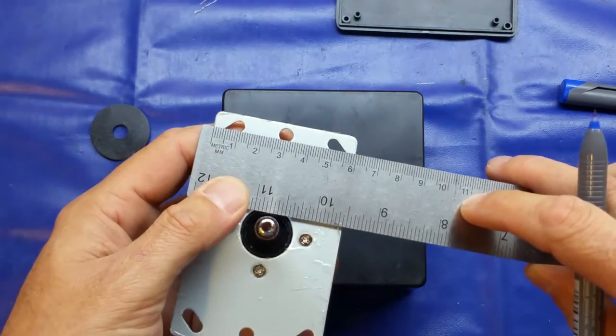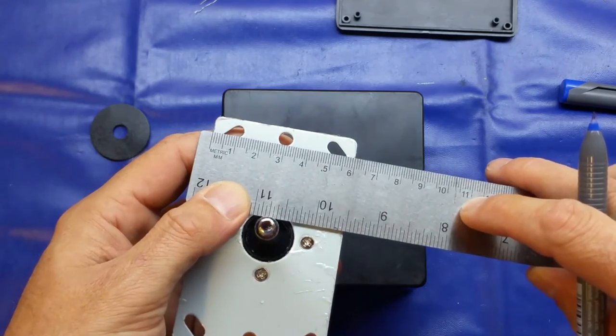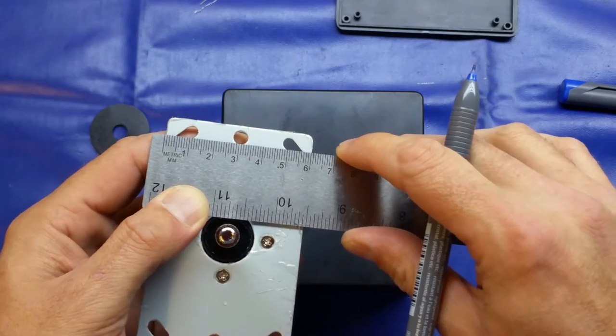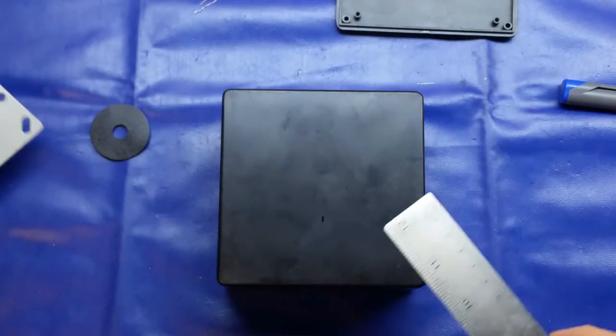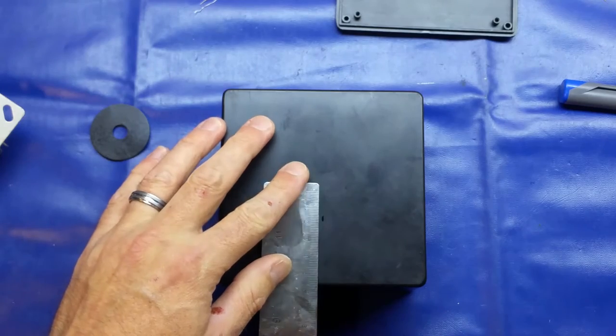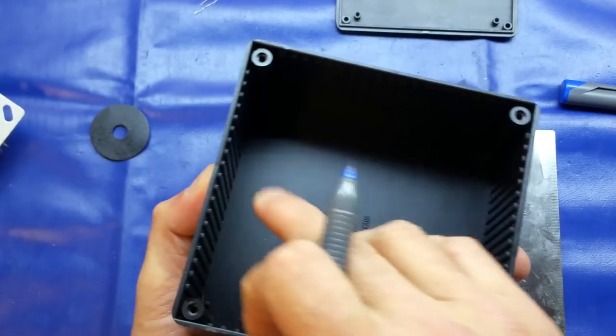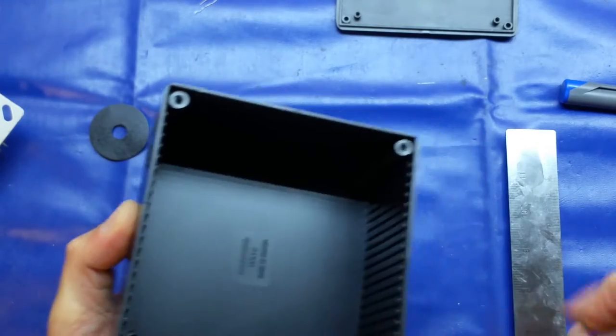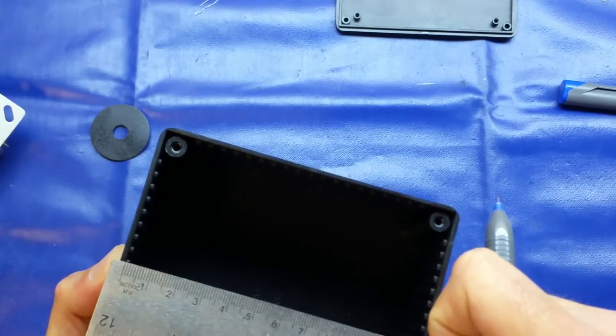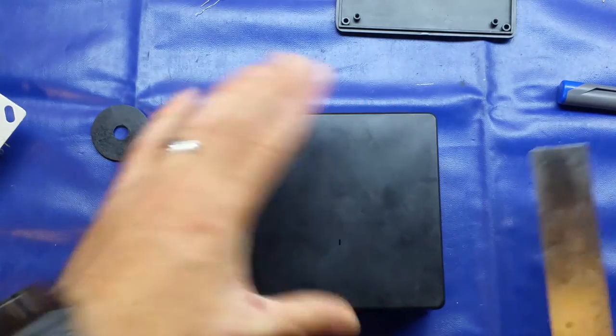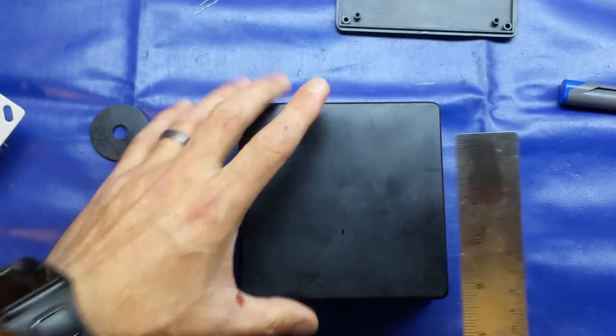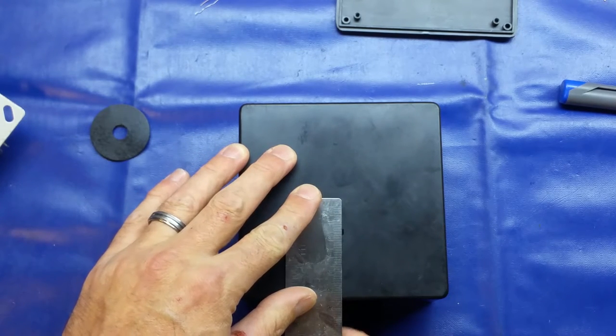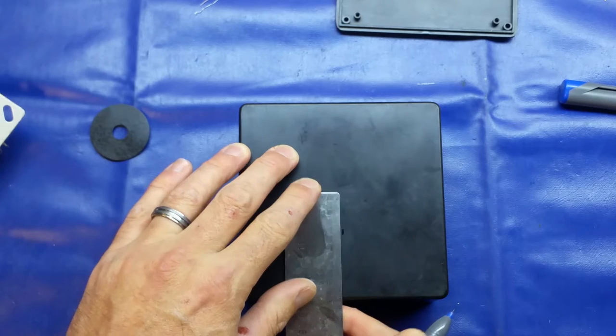Looking at the joystick module itself, we can see that it's 60 millimeters across, so we'll mark 60 millimeters. Now this case has got ribs in it for sliding PCBs in, and that's around three millimeters across. So I'm going to add that to it, giving us 63 millimeters, and I'll go to the halfway point.